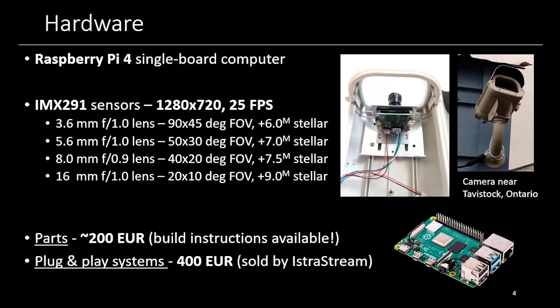This is how our systems look. The Raspberry Pi 4 is used as the computer — you can buy it very cheaply for about $35. We're using the IMX 291 sensors, which have HD resolution and are operated at 25 frames per second. We use various lenses. The most commonly used one is the 3.6 mm lens, which gives a field of view of about 90 by 45 degrees, and in nominal conditions gives a stellar limiting magnitude of about +6. For cities with more light pollution we usually use 8 mm lenses, and for very precise trajectories we recommend 16 mm lenses.